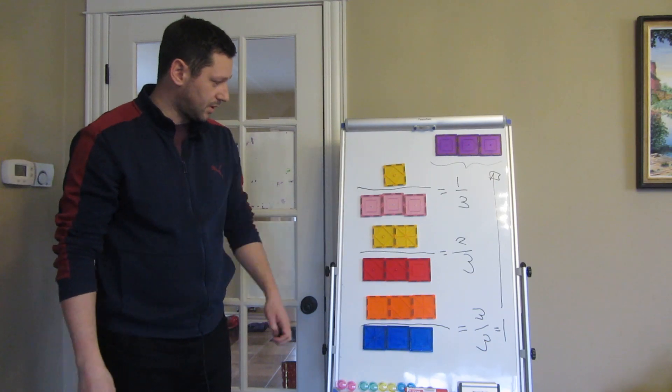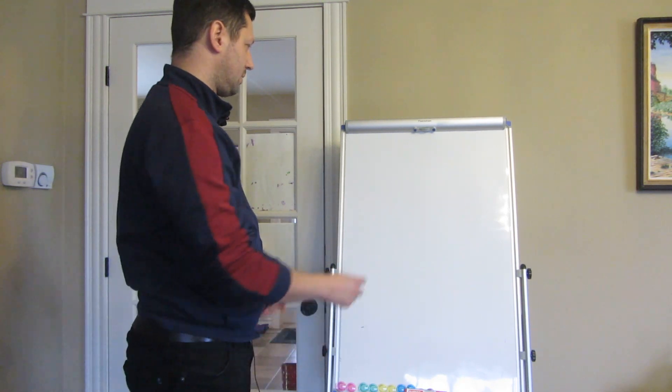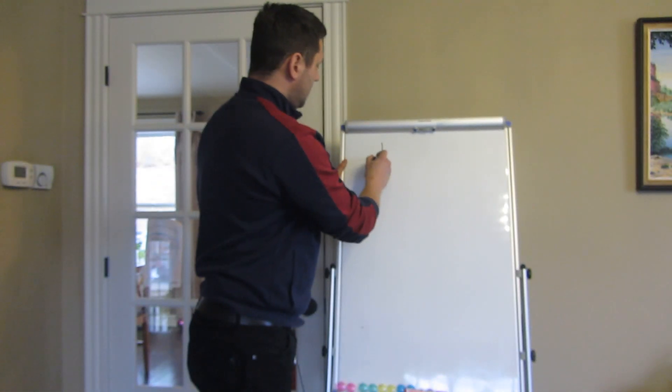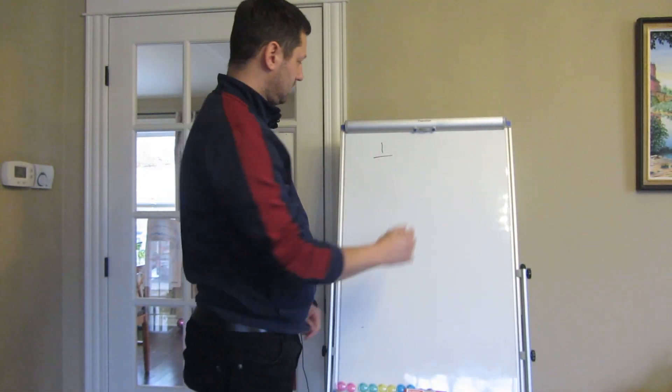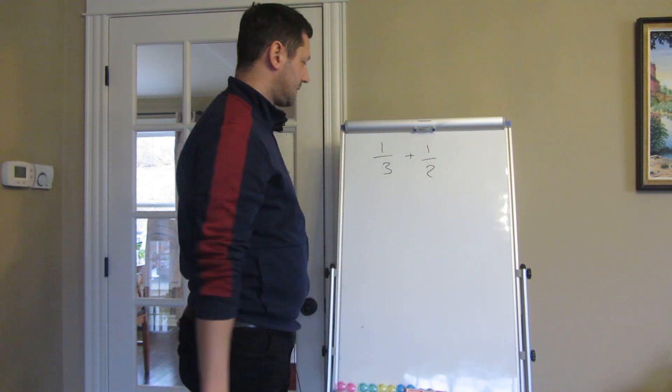So this is how fractions work. Now that we understand what fractions are, we can tackle that example. So we can do it mechanically, following an algorithm. So one third plus a half.